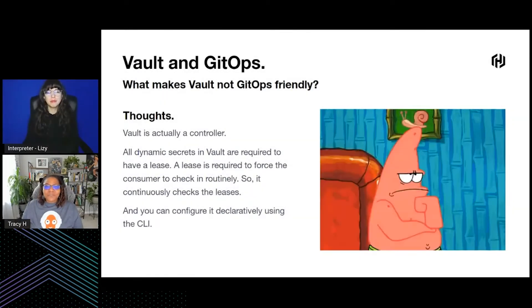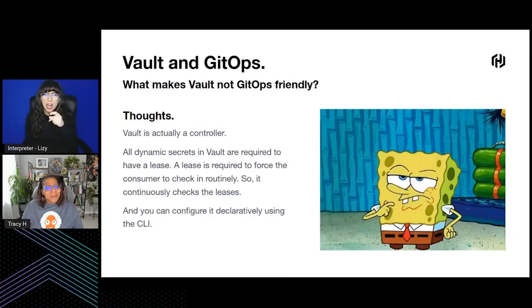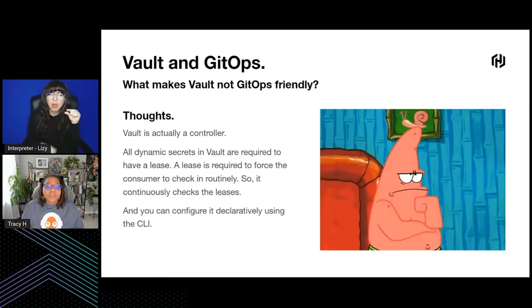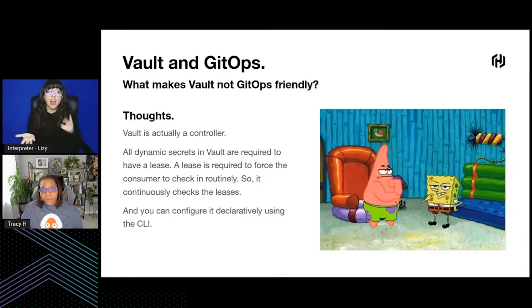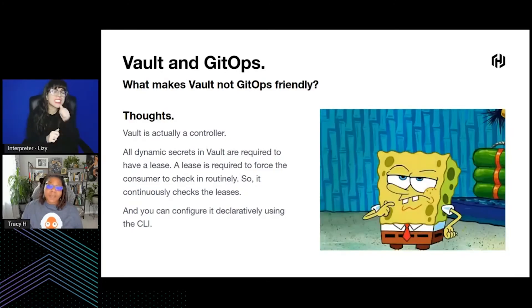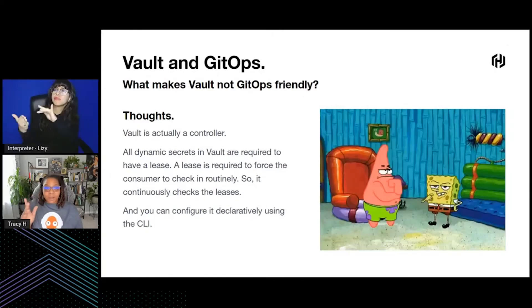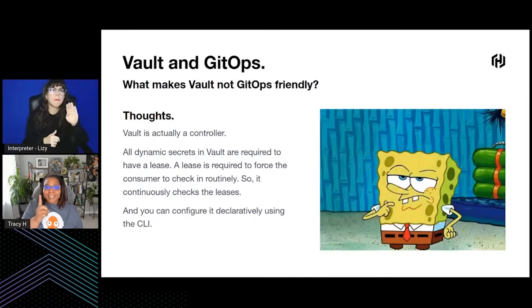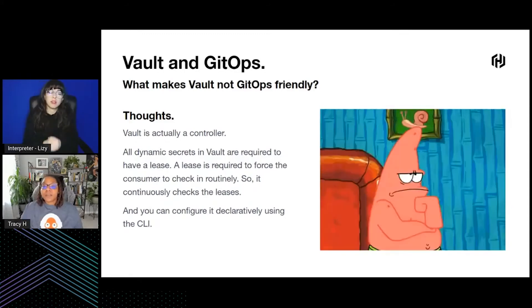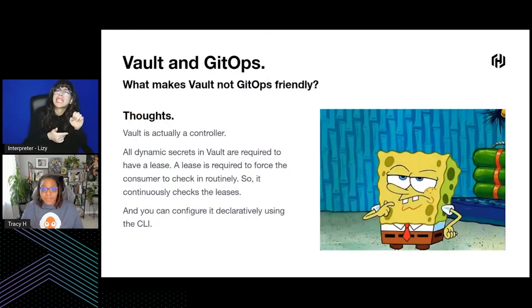What makes Vault not GitOps friendly anyway? Is it actually not GitOps friendly by default, or does it just take a minuscule amount of work? Vault is its own controller — it has an awareness of the diff for you. From a security standpoint, you just need to know that you need to change the secret; you don't really need to know what the secret is. It's trying to reconcile the state of what it thinks is going on versus the actual secret, and it's declarative — it'll find something isn't right and overwrite and renew the secret.